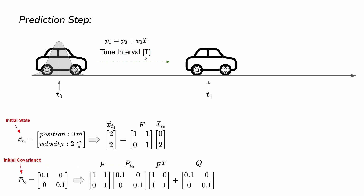After a time interval of capital T — which we assume is one second in this example — the vehicle has moved to a new position. To remind you, position is the integration of velocity over time. The position at the next time step is the addition of the current position plus velocity multiplied by the time interval. This integration relationship is what we encode in the F matrix, the state transition matrix.